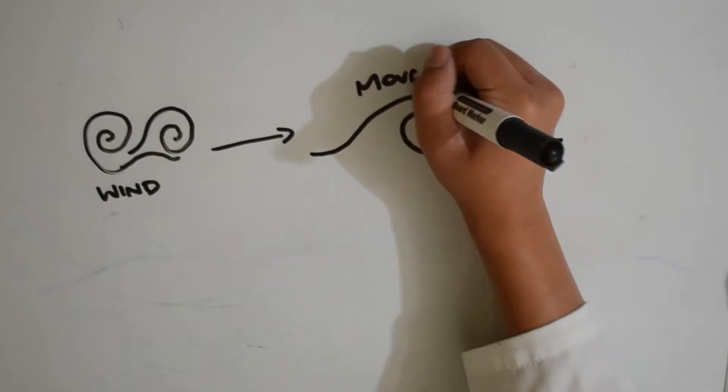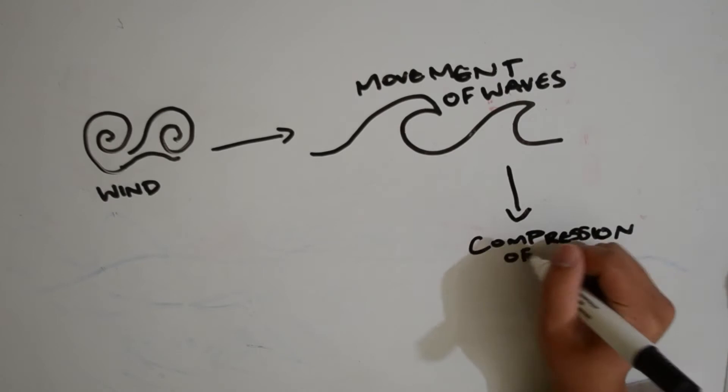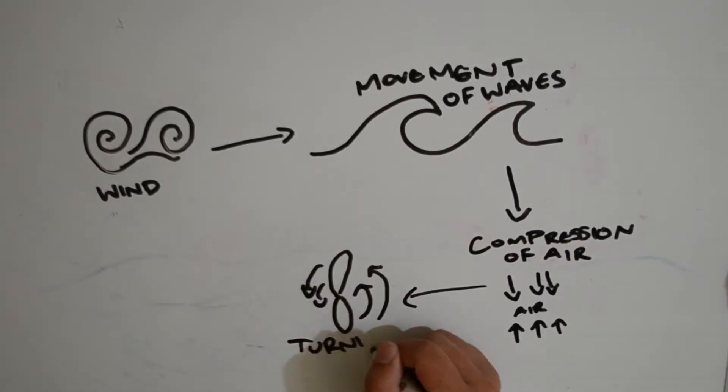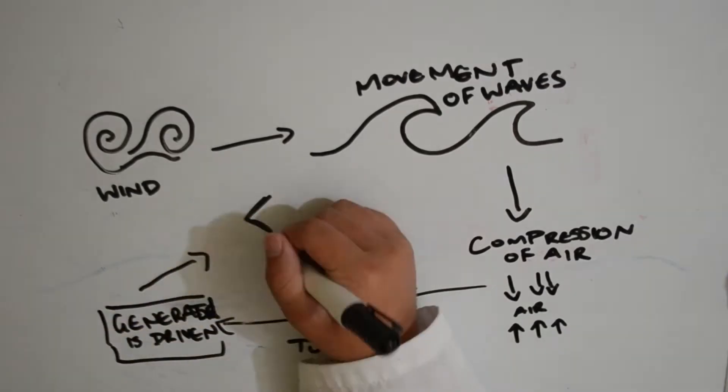Main energy transformations. An oscillating water column. It begins with wind blowing, to the movement of waves, to the compression or decompression of air, to the tunnel turbine, to the generator being driven, and the production of electricity.